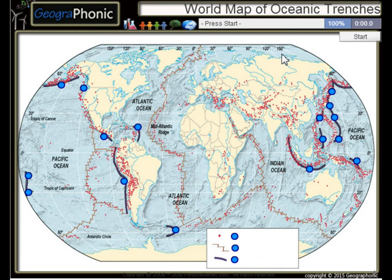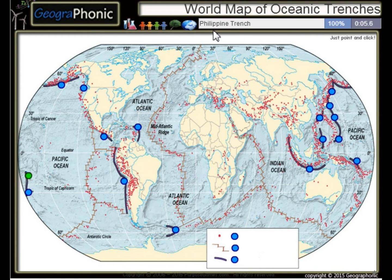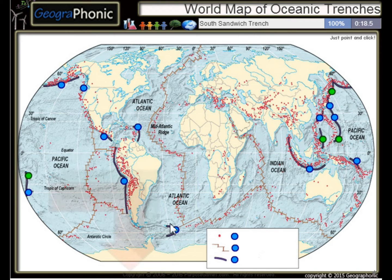This is a free geography game. It's about the world map of oceanic trenches, the largest trenches in the world. First one we see is the Tonga Trench, this is the Philippine Trench, the Mariana Trench, the Kuril Trench, the South Sandwich Trench, the Middle America Trench.